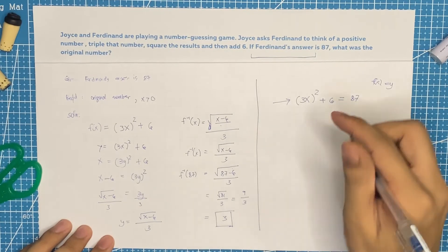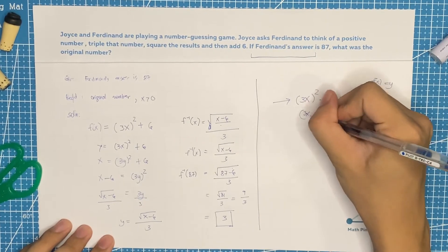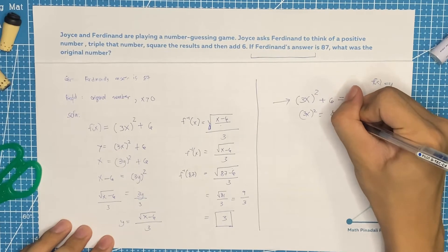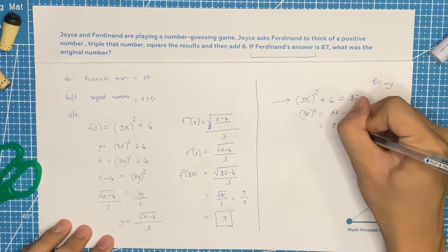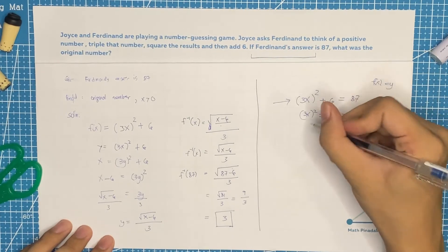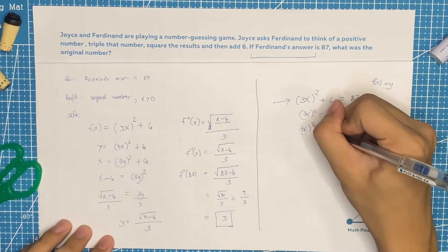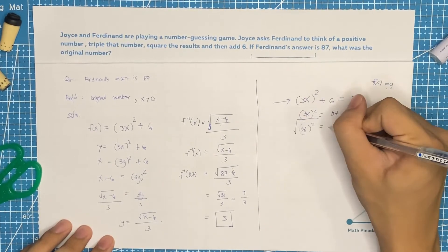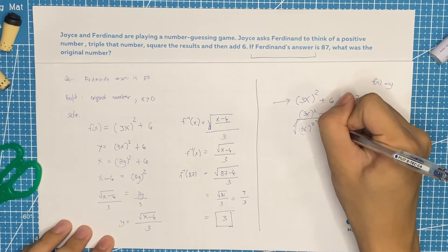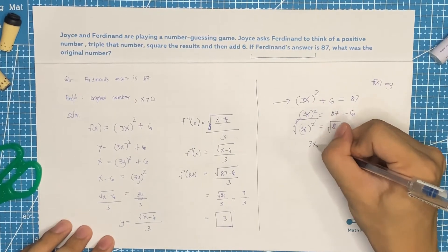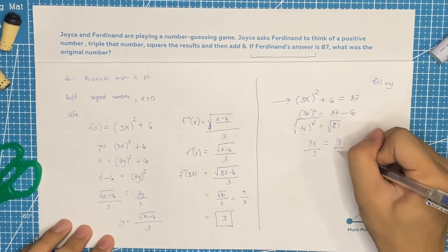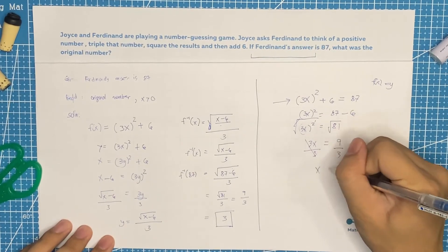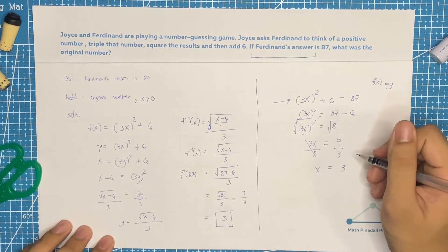Then in this equation, let's solve for the value of x. So that would be 3x squared is equal to 87 minus 6. So that would be equal to 81. 3x squared is equal to 81. Take the square root of both sides, cancel the square root and the square. That would be 3x equals 9. Divide by 3, that would be x is equal to 3.